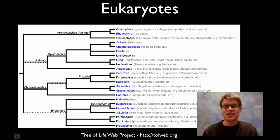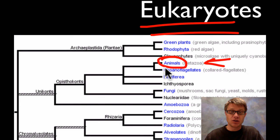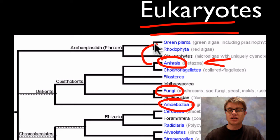If we look at the phylogeny of animals, these are eukaryotes, so we're looking at things that have a nucleus and organelles. Metazoa is the group that we're in. Things that are relatively close to us include fungi and amoebas, but we're pretty distant from green plants.